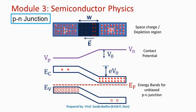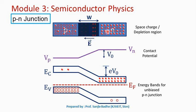There is a non-uniform distribution of carriers — a large number of holes on the P side and a large number of electrons on the N side. So diffusion will occur: electrons from the N side will diffuse to the P side, and holes from the P side will diffuse to the N side. As electrons diffuse from N to P, they leave behind a positive charge near the junction, and as holes diffuse from P to N, they leave behind a negative charge near the junction.